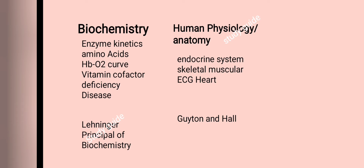In biochemistry, enzyme kinetics is mostly asked, then amino acid structure, their role, pH and pKa values, then the hemoglobin-oxygen curve and whether it is shifting rightward or leftward. Another topic is vitamins, cofactors, vitamin deficiency, deficiency diseases, and metabolic pathway interference. The recommended book for this is Lehninger's Principles of Biochemistry.